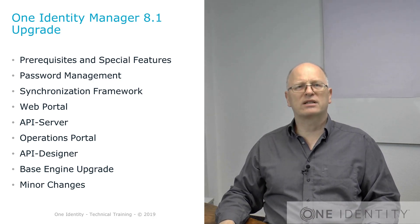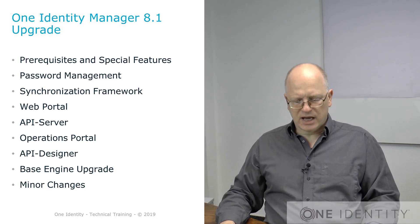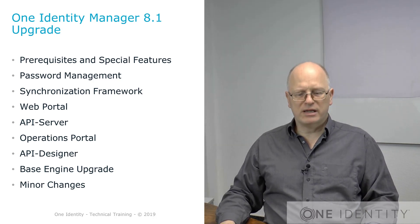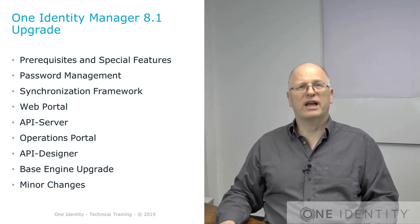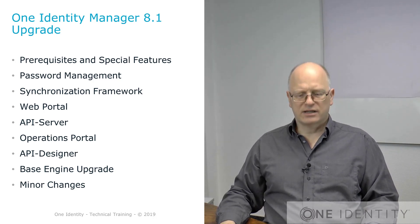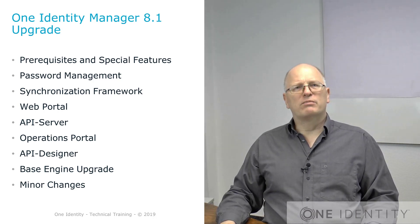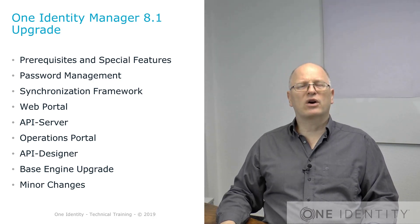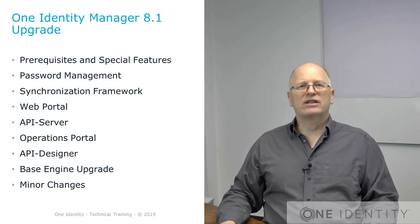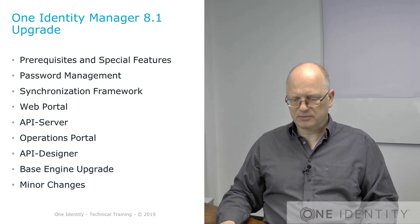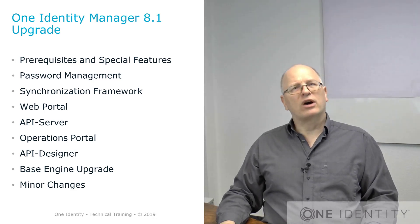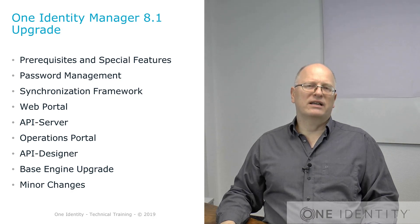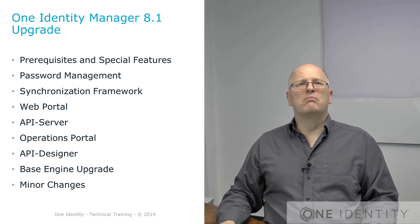We will start with some prerequisites and I will outline again what is divided. We will also talk about password management in a second step — many improvements there. We will then talk about connected system modules, those nice things you can connect to the Identity Manager. That's followed by synchronization framework changes, where a lot of things are waiting for us. Then we will talk about the new web portal, together with the new operations web and the API server in a rough overview. Last but not least, we talk about base engine upgrades, and after that, if there is time, some minor updates.